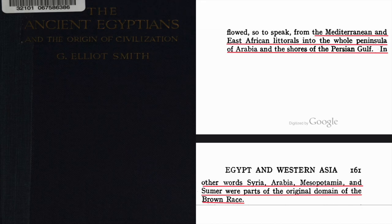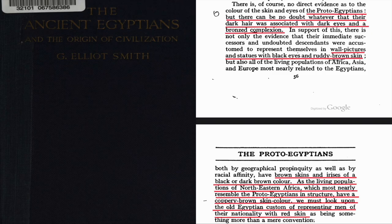The term 'brown' in this context refers to skin color and is simply a euphemism for Negro. According to the book The Ancient Egyptians and the Origin of Civilizations by Elliot Smith, the Mediterranean and East African littorals extended into the whole peninsula of Arabia. In other words, Syria, Arabia, Mesopotamia, and Sumer were parts of the original domain of the brown race — the proto-Egyptians. Their dark hair was associated with dark eyes and a bronzed complexion.